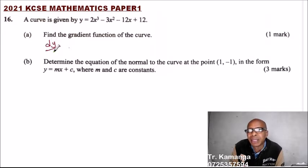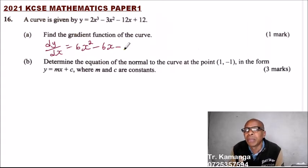So you get dy over dx equals. When you differentiate, you multiply the index with a constant. So 3 times 2 is 6x. You minus 1 from the index. So 3 minus 1 is 2 minus 2 times 3. That will give you 6x to power 1 because you subtract 1 from 2.